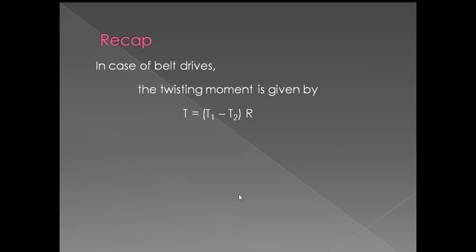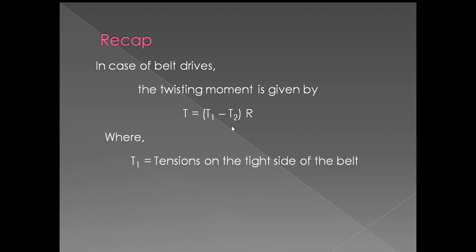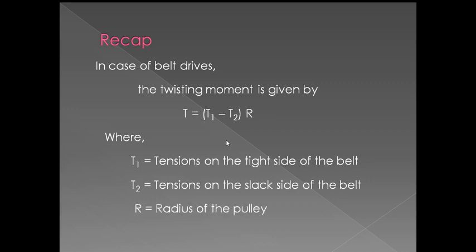In the case of belted drives, the twisting moment is given by T equals (T1 minus T2) into R, where T1 is the tension on the tight side of the belt, T2 is the tension on the slack side of the belt, and R is the radius of the pulley.